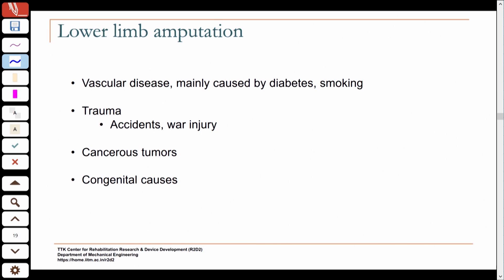A lower limb prosthesis is used by a person who has had a lower limb amputation — their leg has been cut off at some level. There are various causes for lower limb amputation. Vascular disease, mainly caused by diabetes or smoking, is a major cause, especially as a person ages. If diabetes is not controlled over a long time, secondary problems can develop leading to amputation.